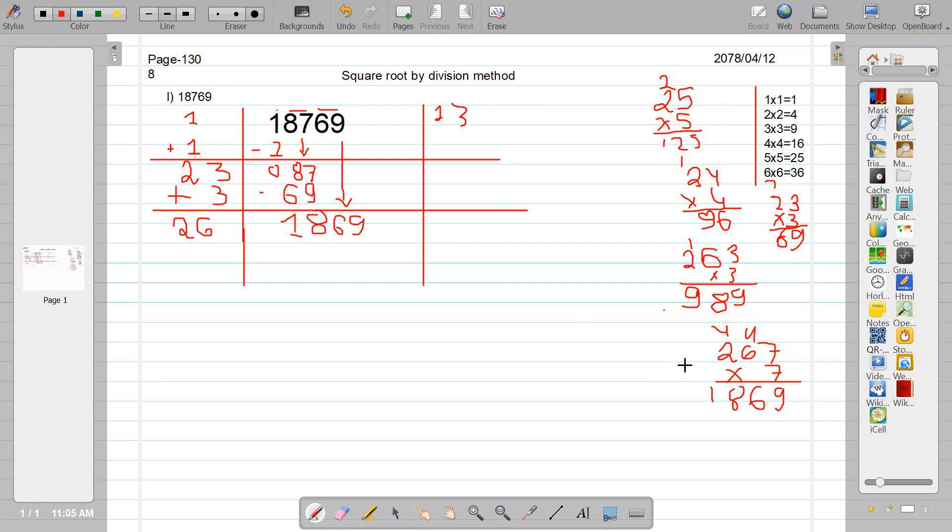Exactly, we are getting the same number. It means this is the required number. So, we multiply by seven here. Whatever we use there, we use here also seven. Now, 267 times 7 is 1869. We use the same. One, eight, six, nine. Minus, here it is zero. And here, seven plus seven is 14, carry over one. Six plus one is seven. Now, required square root.